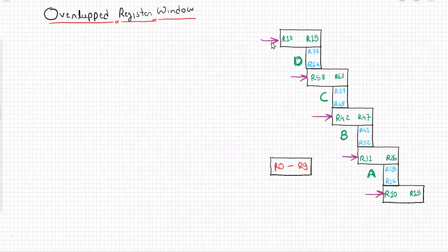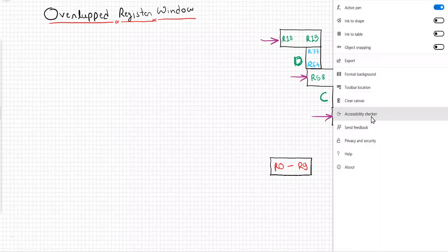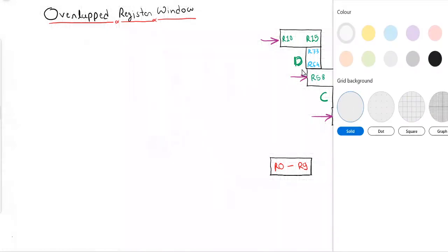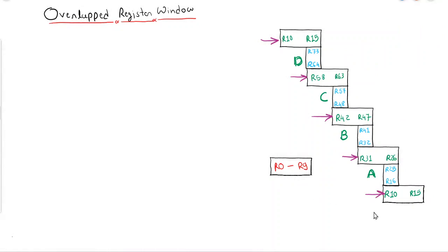The registers marked with magenta color are the shared registers. Let me explain how these shared registers are useful. If process A wants to share any data with process B, then whatever data there is will be stored into R10 to R15.